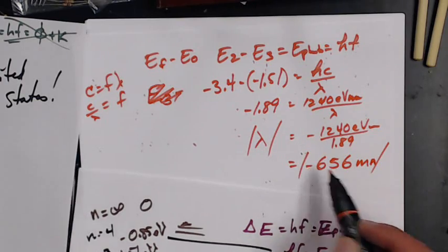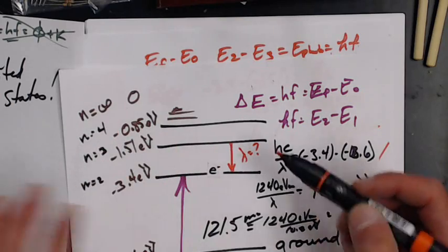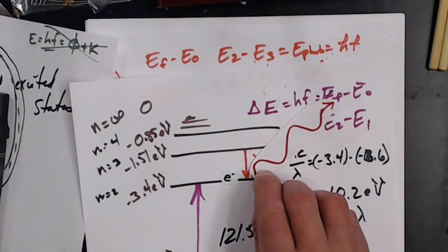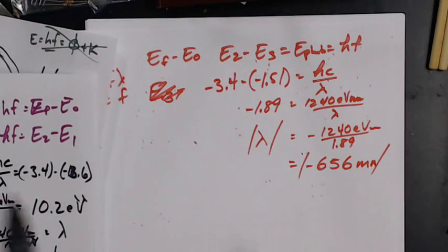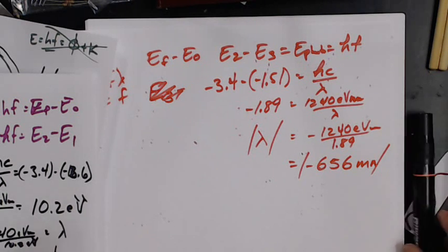What does the negative mean? The negative means that when that electron fell down, a red 656 nanometer photon came flying out. So the negative means that energy is released, just like energy is leaving the system, just like in thermodynamics.